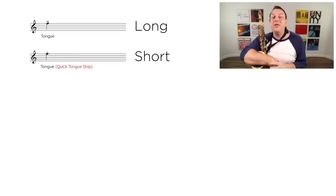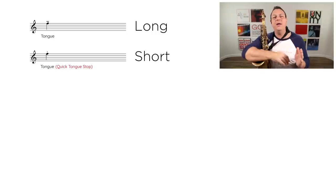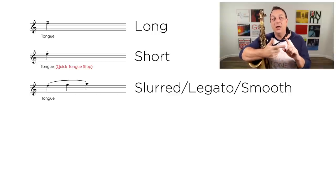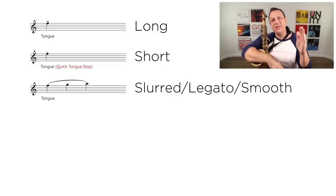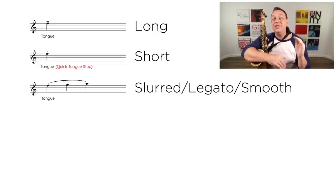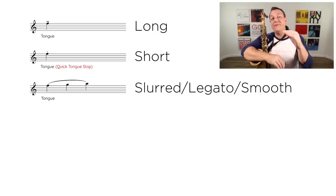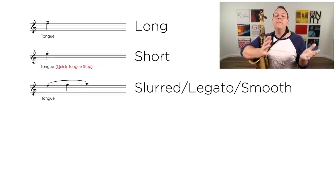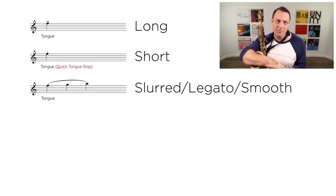The only other thing you've got is how the notes join up with each other. If something is slurred, legato, or smooth — they all mean the same thing. You tongue the first note and then you just move your fingers and you don't rearticulate the next series of notes. This only works if you're changing note — if you're on the same note, obviously you have to articulate it again, because otherwise you just have a long note.